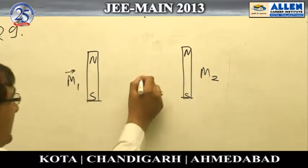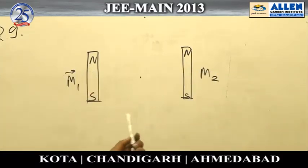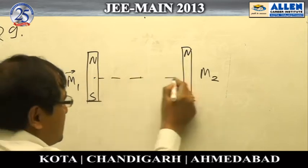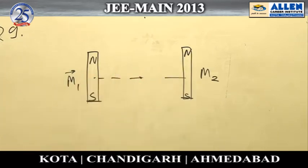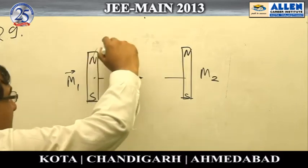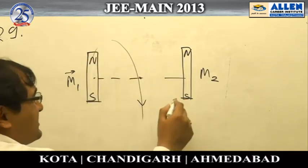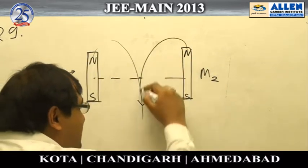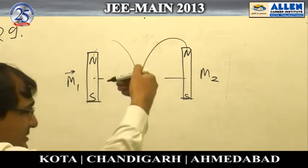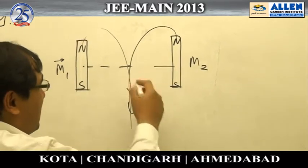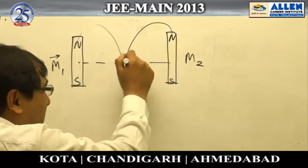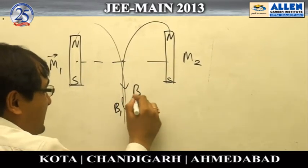Question 29: There are two magnets with magnetic moments M₁ and M₂ placed parallelly. We have to find the magnetic field at a particular point on the bisector, exactly located in between the two magnets. The magnetic field due to the first magnet and the second magnet is directed as shown by the magnetic field lines.